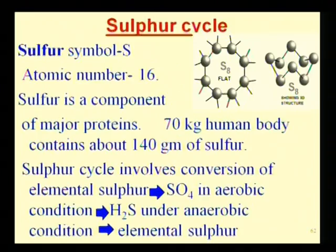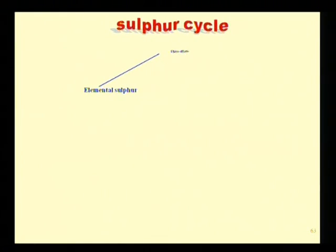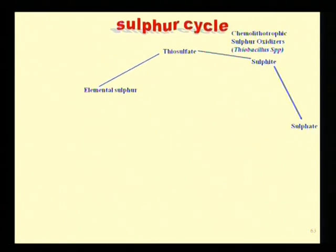The last element is the sulfur cycle. Sulfur is a component of major proteins; a human body contains about 70 grams of sulfur. The sulfur cycle involves the conversion of elemental sulfur to sulfate under aerobic conditions, to H2S under anaerobic conditions, and back to elemental sulfur. The elemental sulfur is converted through thiosulfate to sulfate under aerobic conditions.